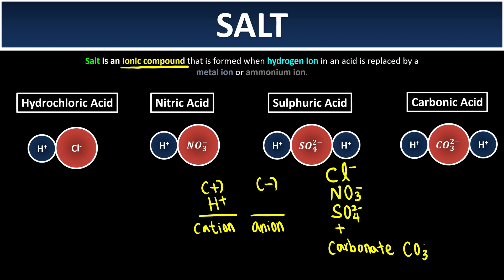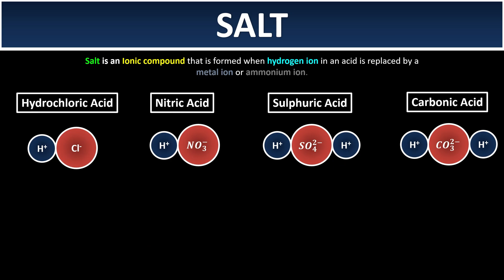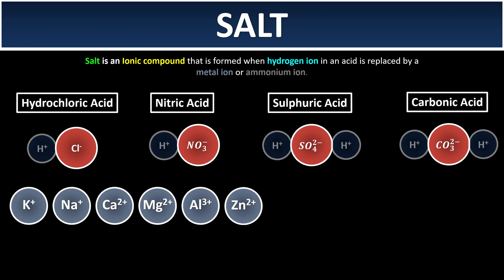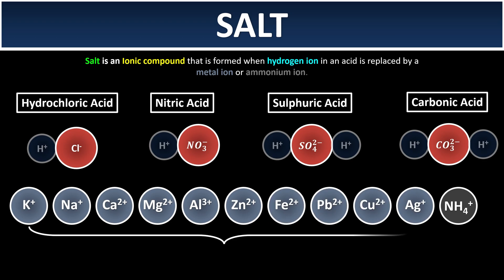The hydrogen ion in the acid is going to be replaced by either a metal ion or ammonium ion. This means we remove the hydrogen ion and replace it with a metal ion — like sodium ion, magnesium ion, or aluminum ion — or with the ammonium ion. In short, all hydrogen ions in the acid will be replaced by either a metal ion or ammonium ion.